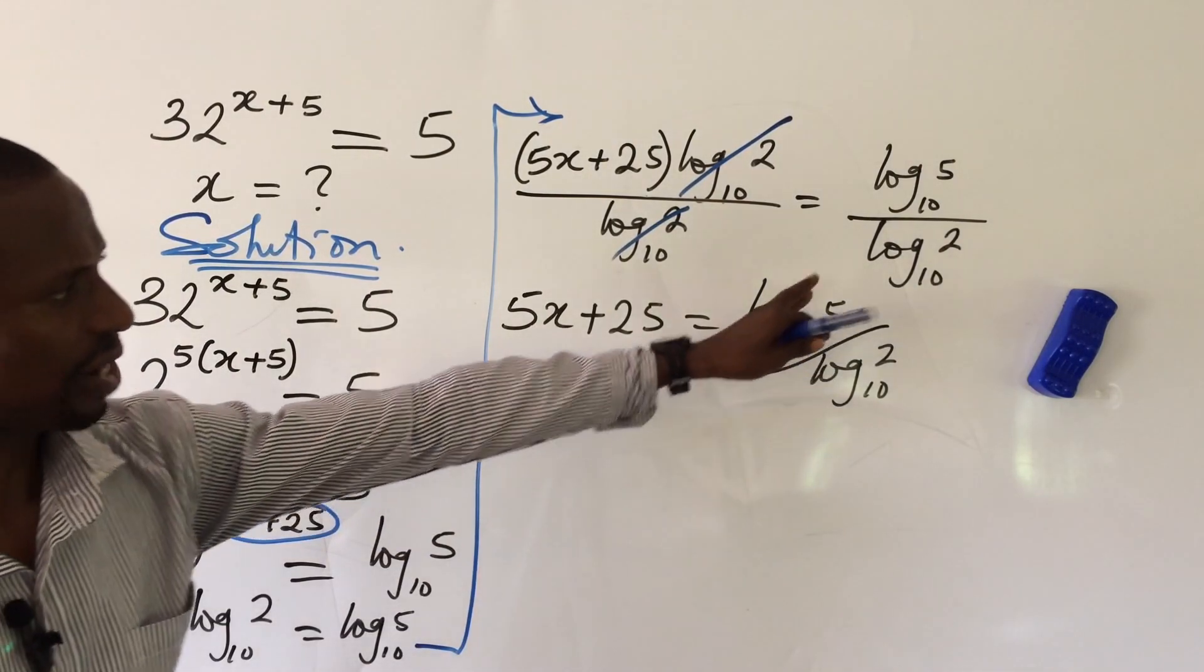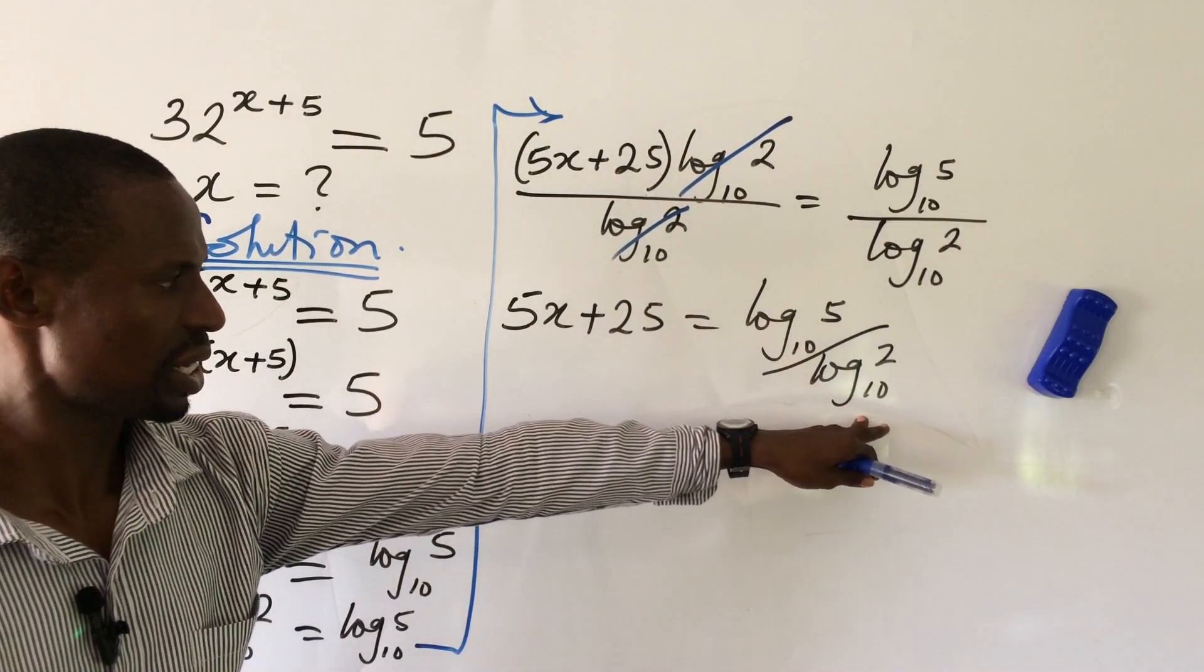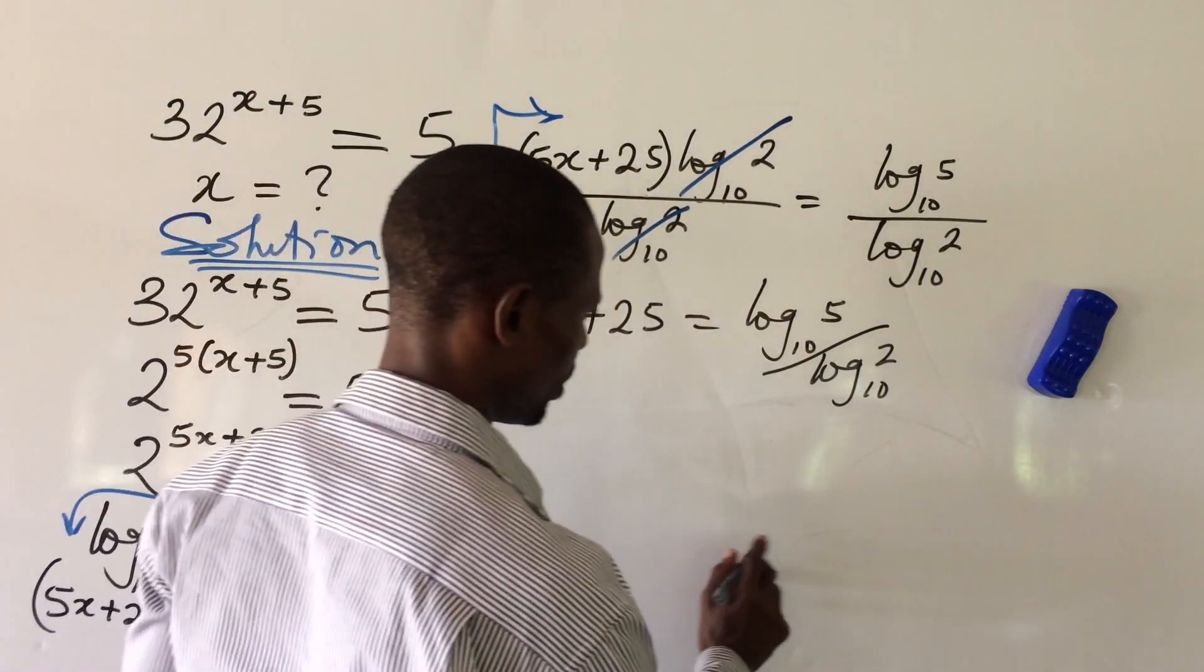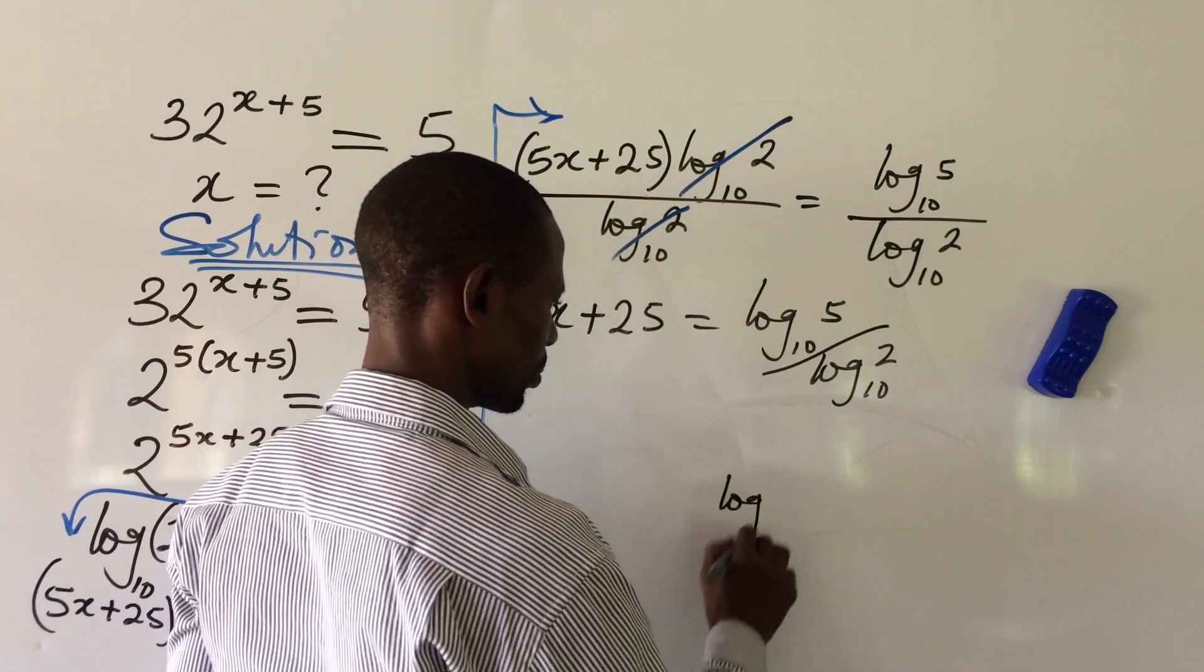5x plus 25 is equal to log 5 base 10 all over log 2 base 10. Easy. Now look at this log 5 base 10 all over log 2 base 10. According to the change of base formula, it says that if you have log A base B, you can change this.